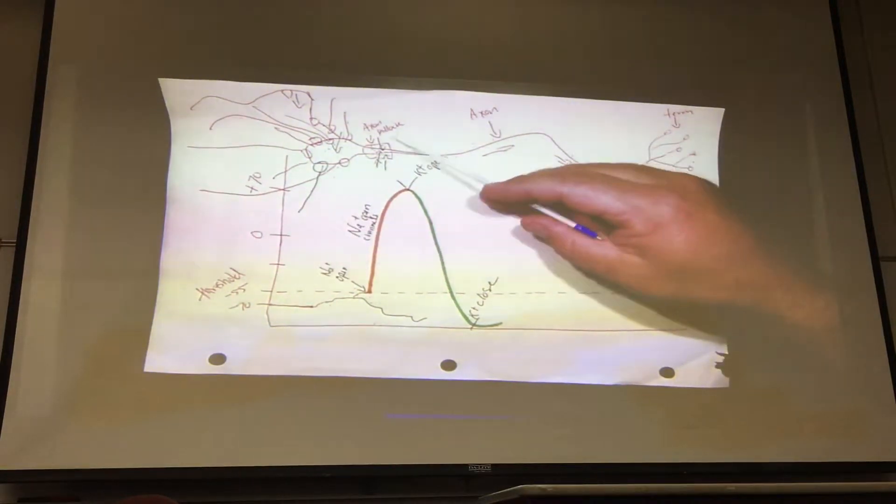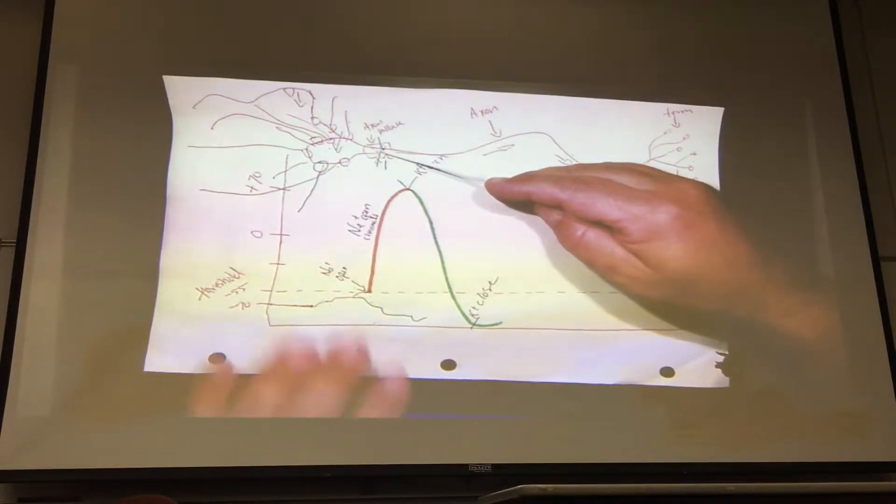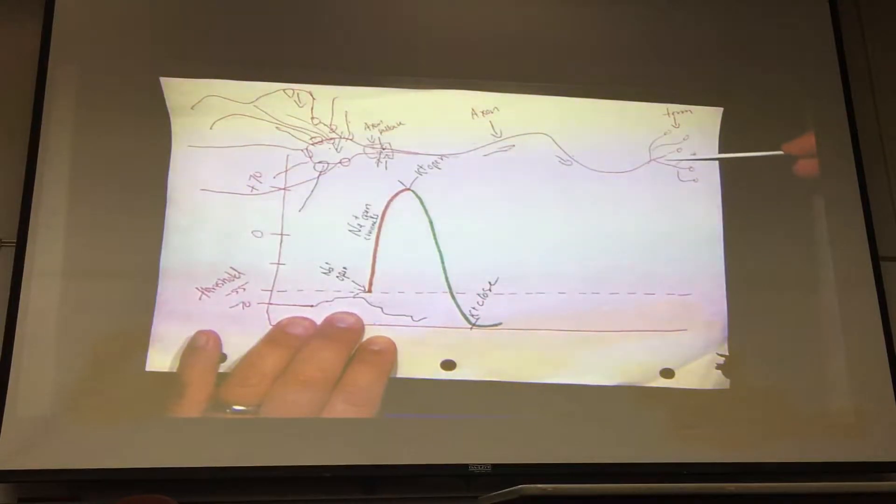I repeat, the axon hillock is the area where we're going to introduce these voltage-gated sodium-potassium channels. Those voltage-gated sodium-potassium channels are all throughout this entire axon of this neuron.